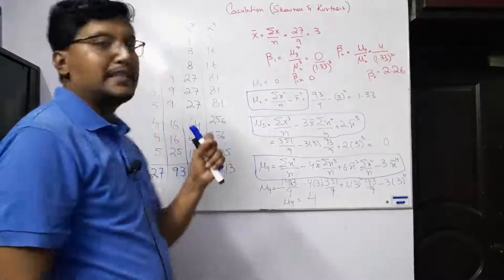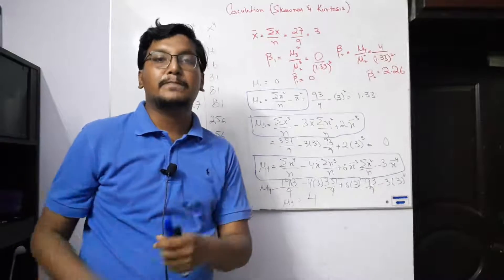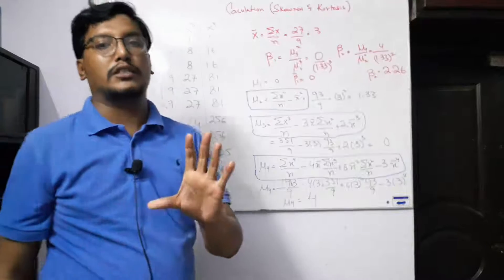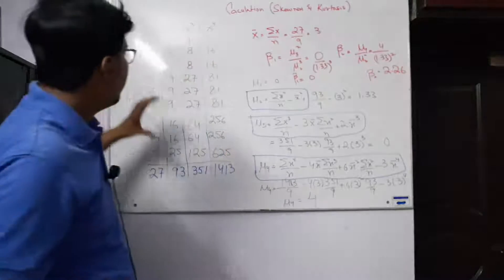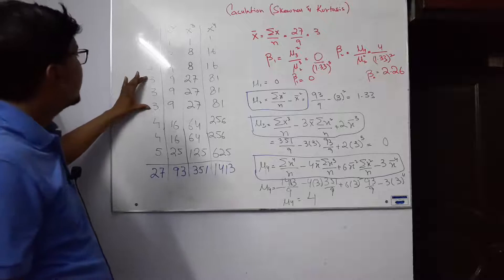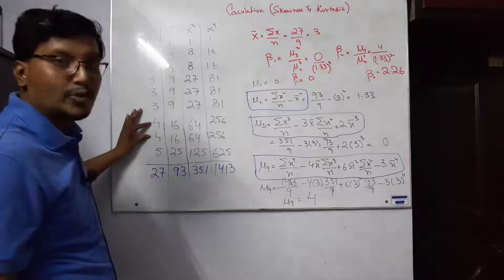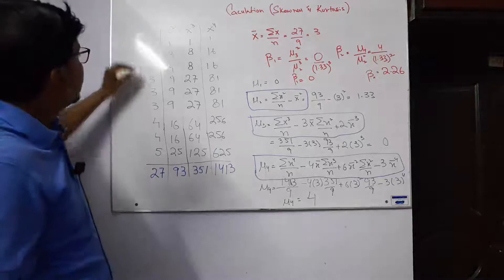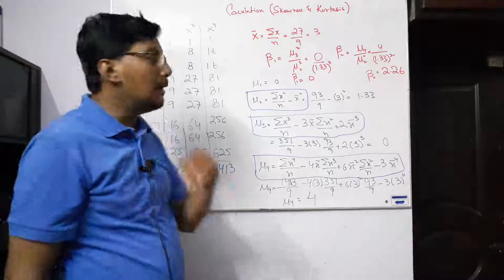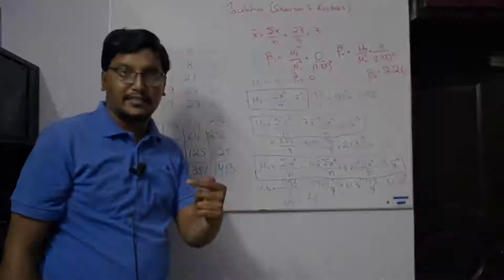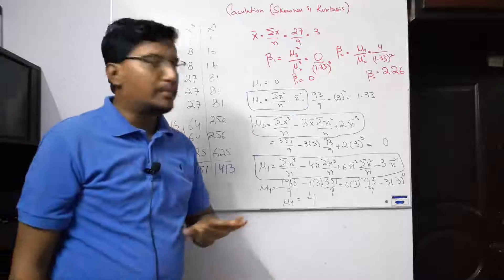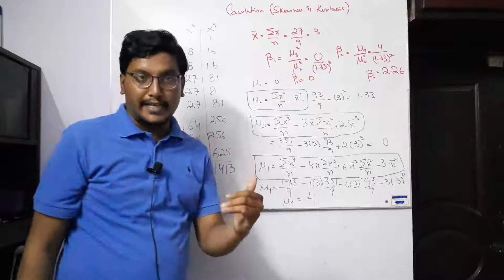Now it is your assignment to check that when we say symmetric, the deviations of frequency are equal. You will check it practically: the mean is 3, and you will count how many values are at each distance from the mean — the frequencies are the same on each side. You can perform this check yourself. So the skewness answer is zero, meaning this is a perfectly symmetric distribution.